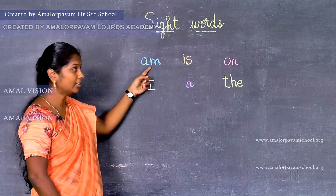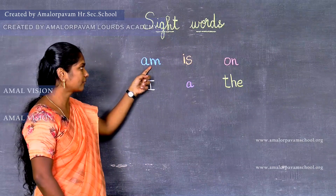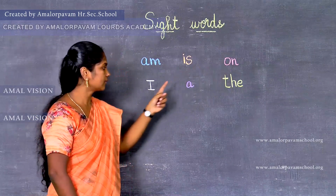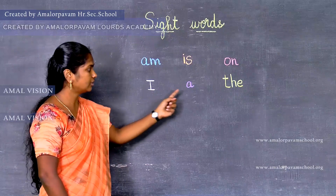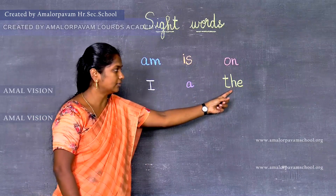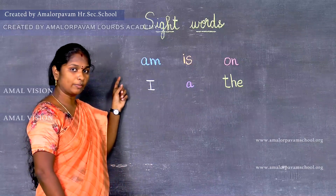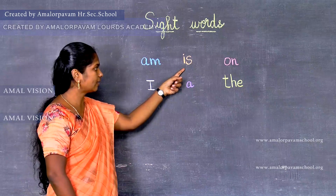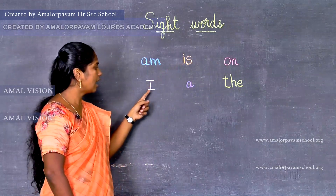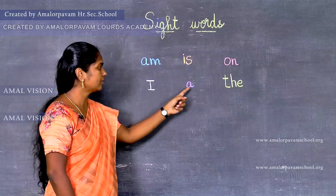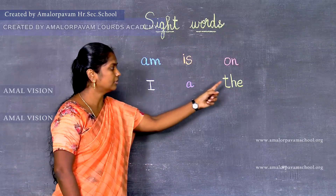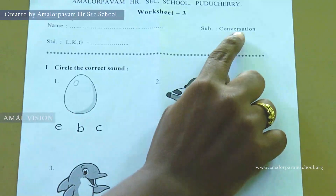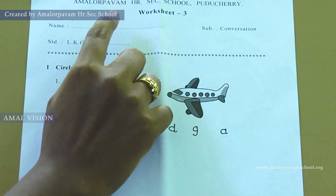Listen carefully. The sight words are: am, is, on, I, a, the. Say it along with me kids: am, is, on, I, a, the. Practice the sight words at your home, kids.